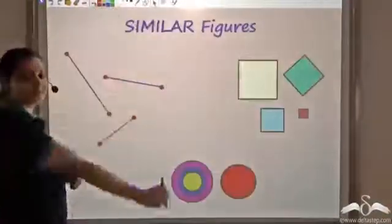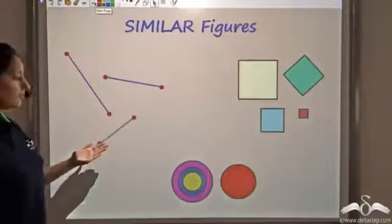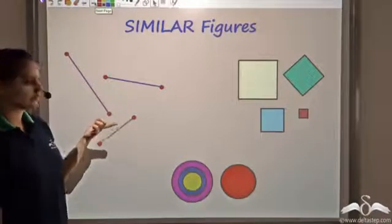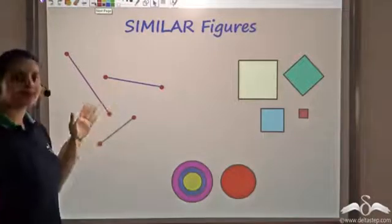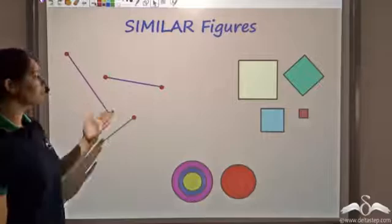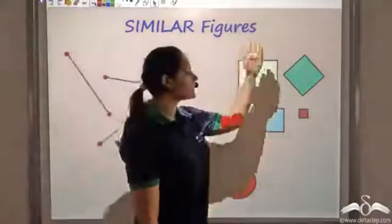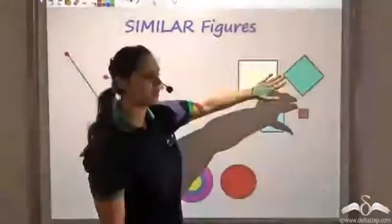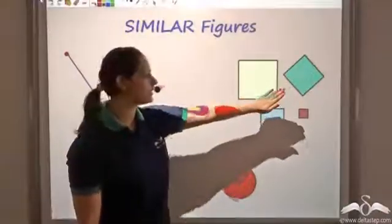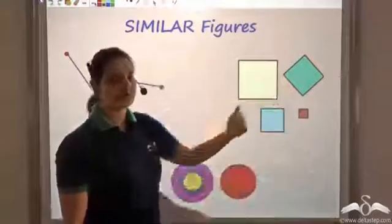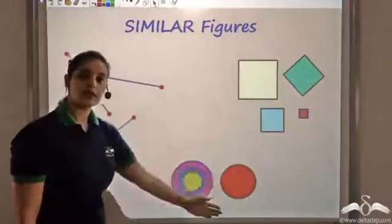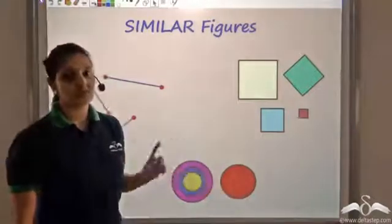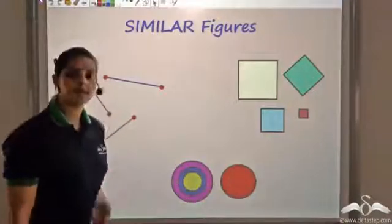Applying this in geometry, we can say that these line segments are similar because the shape is the same — what is changing is the size, which does not matter. Similarly, all these squares are also similar because only the size is changing; the shape remains the same. And in fact, all circles are also similar — the shape remains the same and only the size changes.